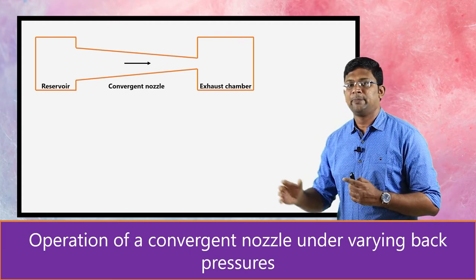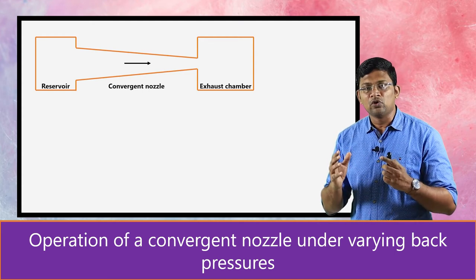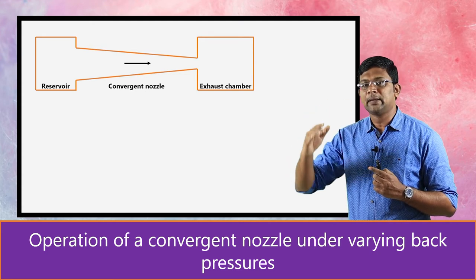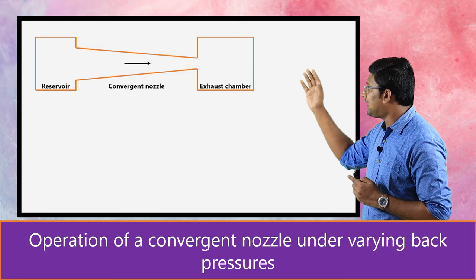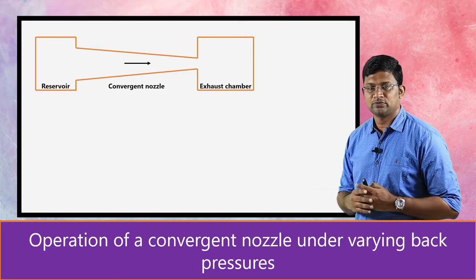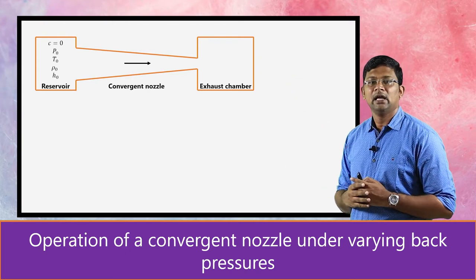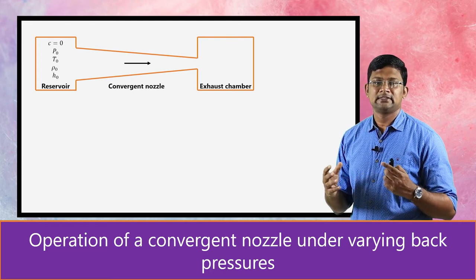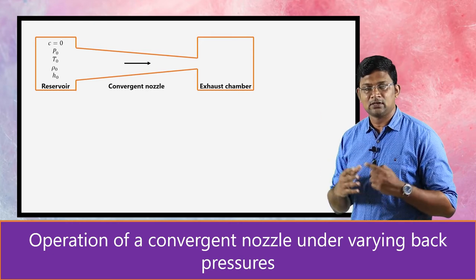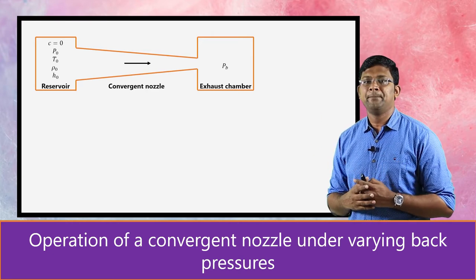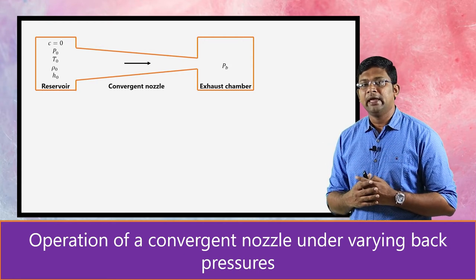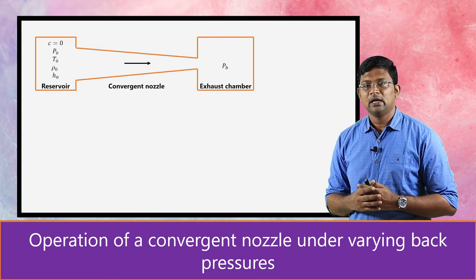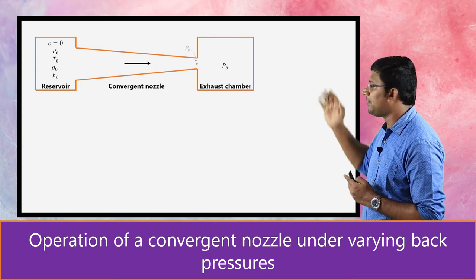Let me first introduce you the experimental setup. Here we have a convergent nozzle. We know a nozzle is the device used to accelerate the flow, so when the velocity of flow is increased, correspondingly the pressure decreases. The nozzle is attached to a reservoir at its entry and an exhaust chamber at the exit. In the reservoir we have stagnation conditions: pressure p0, temperature T0, density ρ0, and enthalpy h0. At the exit of the nozzle we have an exhaust chamber where we maintain a back pressure pb.